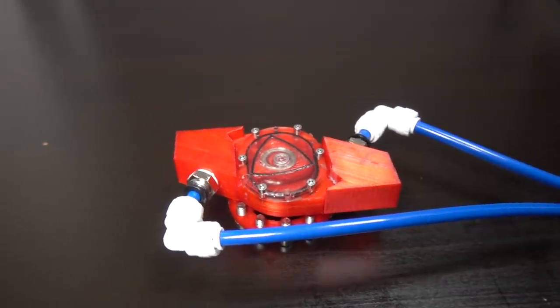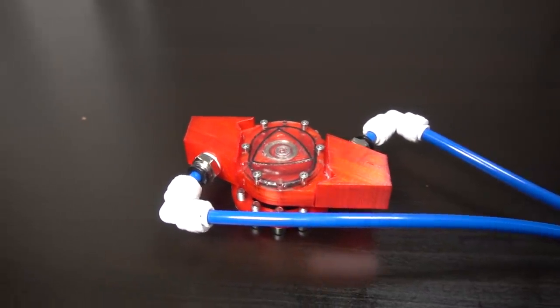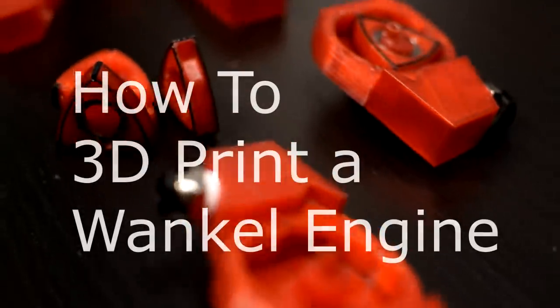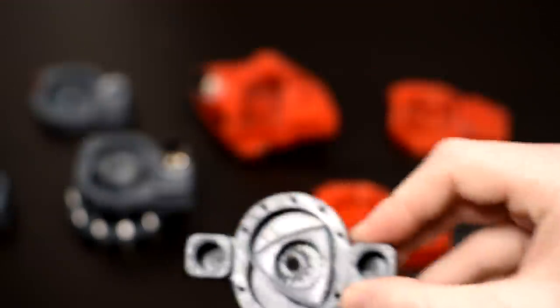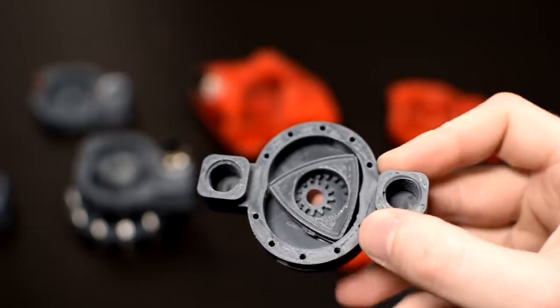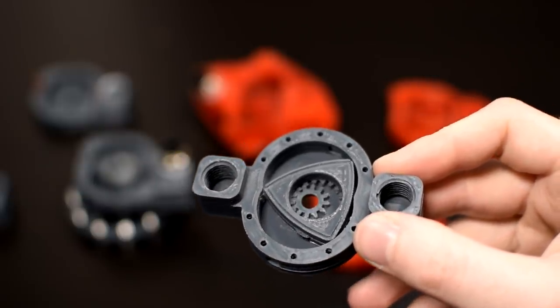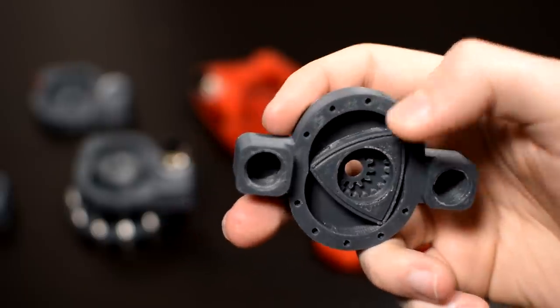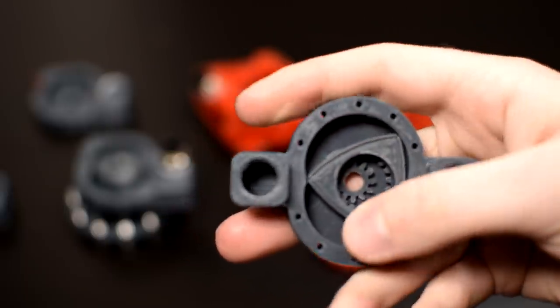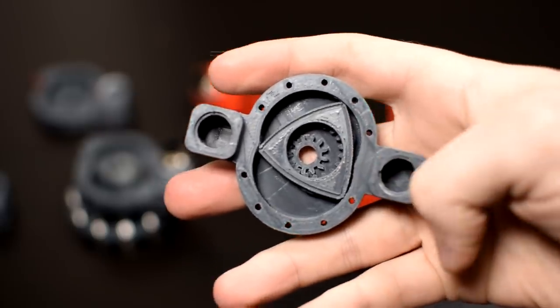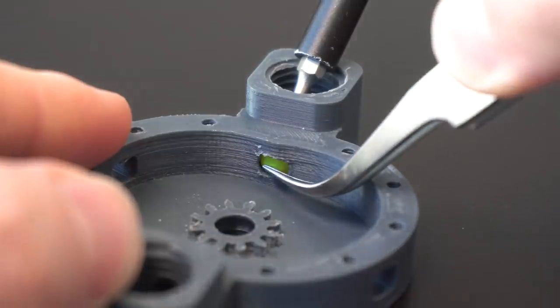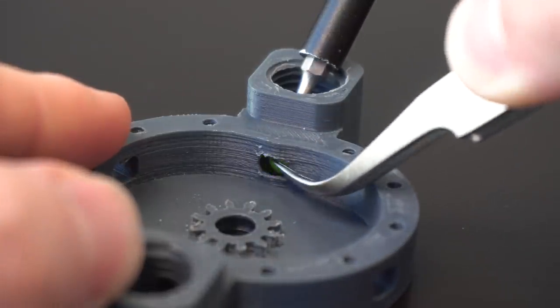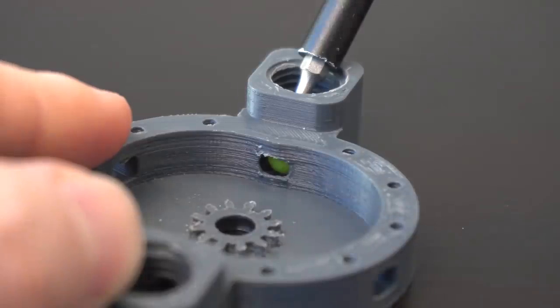So before we look too closely at the final working version, let's take a look at all the different ways I learned how not to make a Wankel engine. First up, we have Jerry. Jerry is actually my second design, but Jerry is such a Jerry he made me lose my first. This design uses little notches printed onto the piston which are designed to open up ball valves at the little crutch of the motion here as this piston spins around. The idea is a little notch pushes the ball valve open, allows air in, expands, spins. Cool idea, didn't work, so I ditched it.